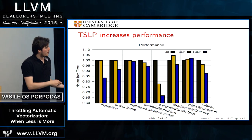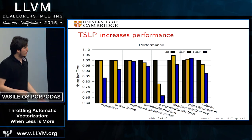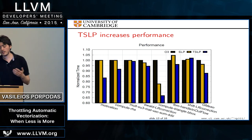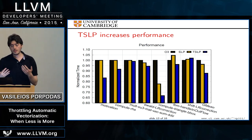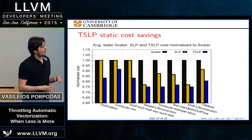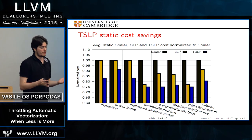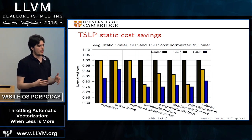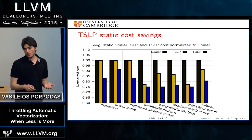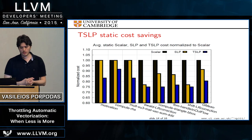There are two kinds of results: in some cases TSLP is the only way to vectorize — SLP fails but TSLP succeeds. In other cases SLP does perform vectorization, but when TSLP applies it vectorizes even more. The static cost graph shows the cost savings reported by the vectorizer itself; TSLP always outperforms SLP by design, since TSLP is only triggered when cost has been reduced.